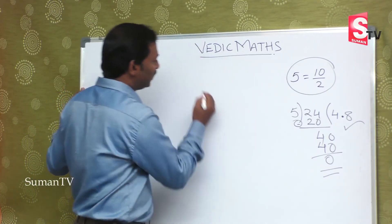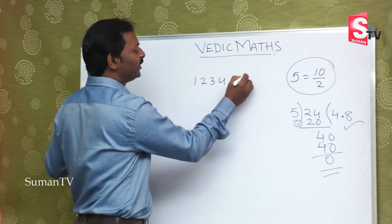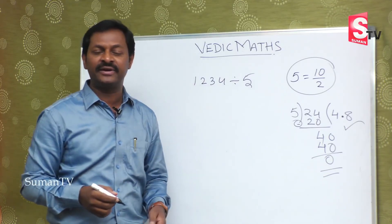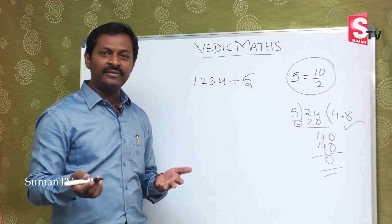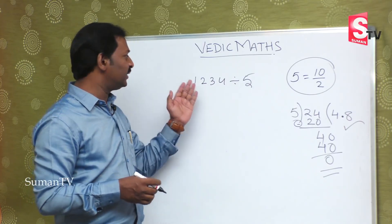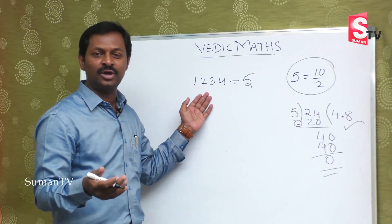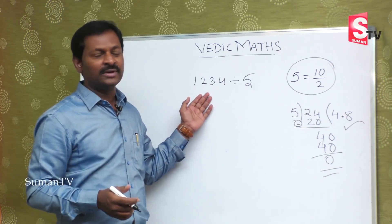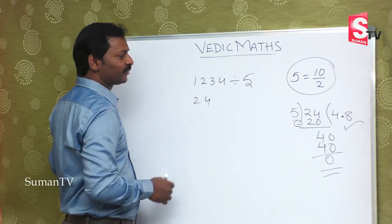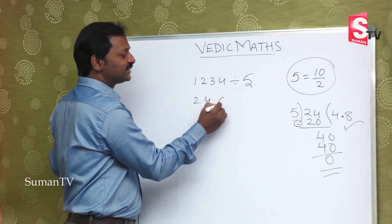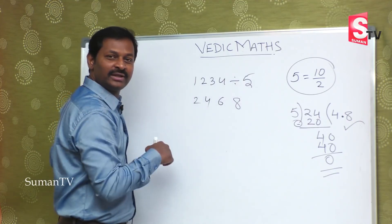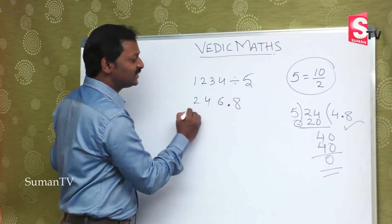Now let us take a bigger number. Suppose one thousand two hundred and thirty four is divided by five. Five means ten by two, so convert the division to two by ten and multiply the number by two. One two-za two, two two-za four, three two-za six, four two-za eight. By ten means put a dot — the answer is two four six point eight.